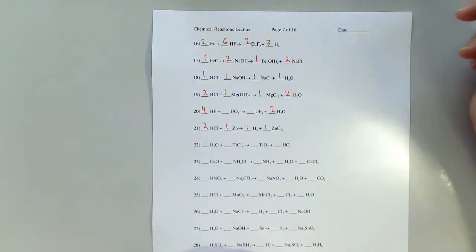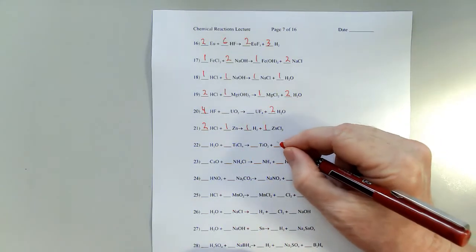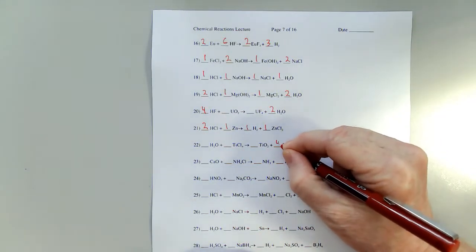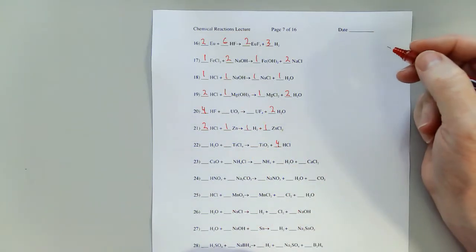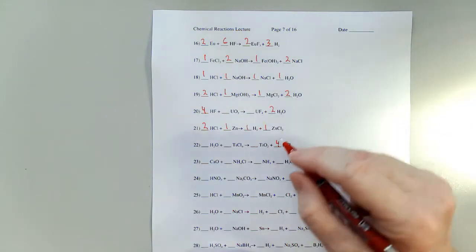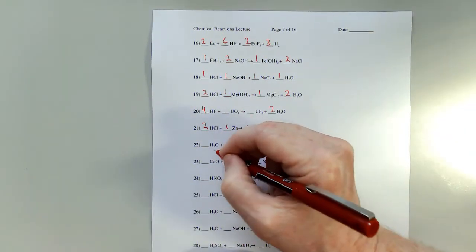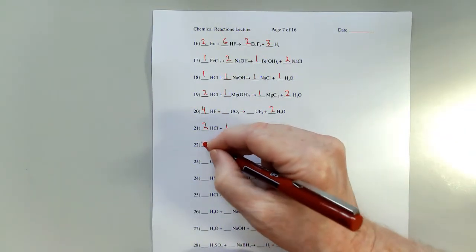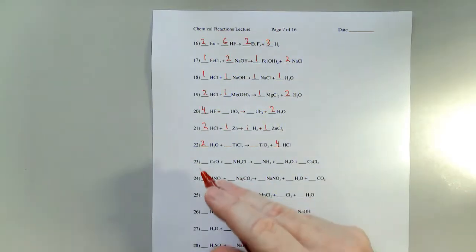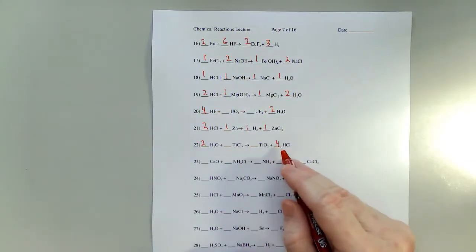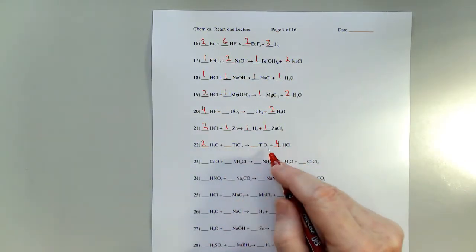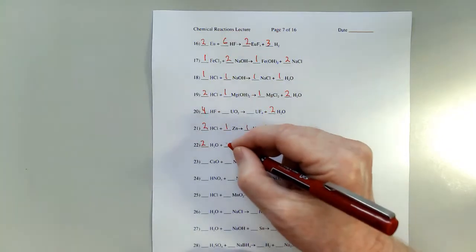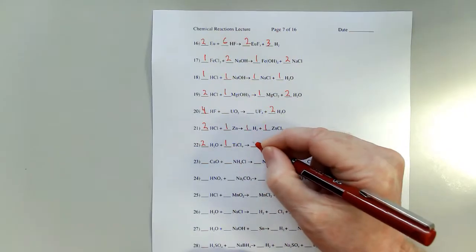In number 22, I've got four chlorines there, which means I need four on my HCl. Now, waters — I've got two hydrogens there, so I'm going to put a two. That gives me four hydrogens, four hydrogens, two oxygens, two oxygens, titanium, titanium. We're in good shape.